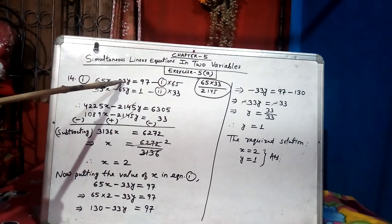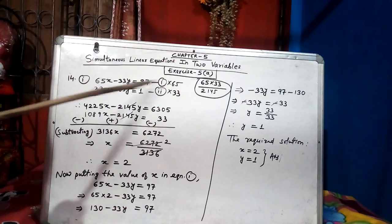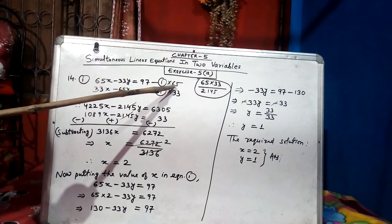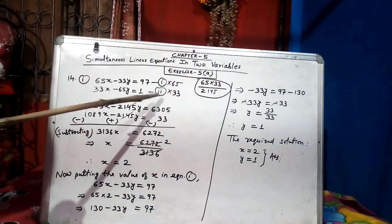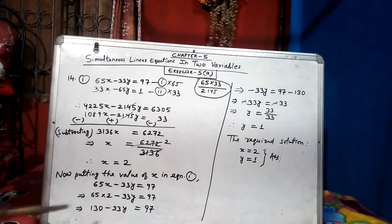That's why to make 33 as 2,145, I have to multiply equation 1 with 65 and to make 65 as 2,145, I have to multiply equation 2 with 33.